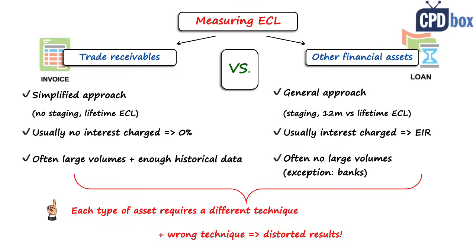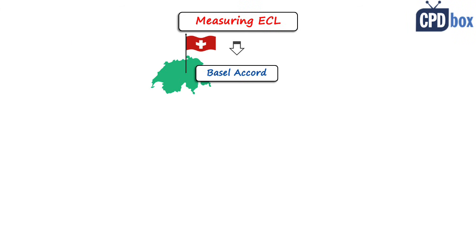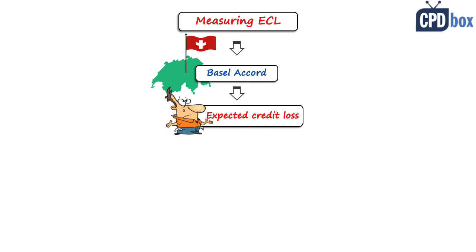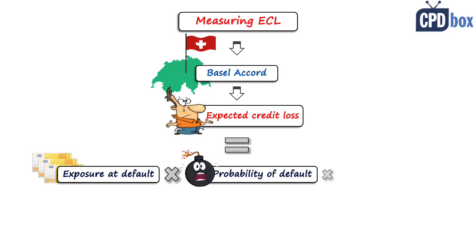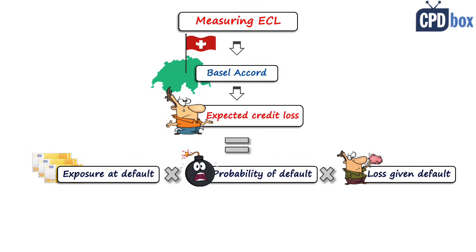These differences mean that each type of asset requires a different technique. There is an established framework for the measurement of expected credit loss known as the Basel Accords, which are banking regulations. While IFRS 9 does not make direct mention of the Basel Accords, the model will be familiar. It breaks down the measurement of ECL into three factors: number one, exposure at default (EAD); number two, probability of default (PD); and number three, loss given default (LGD). Multiplying those three gives you the expected credit loss.